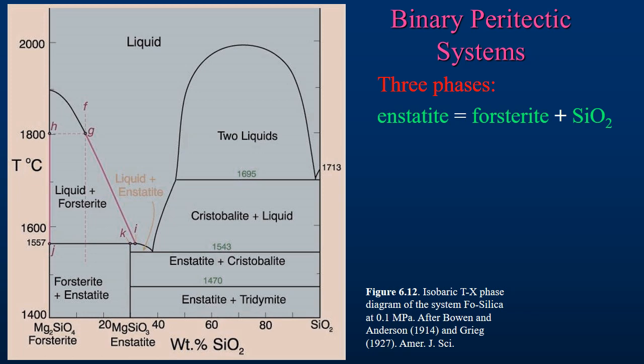On the right side of the eutectic point, the behavior of the forsterite-silicate system is similar to the traditional eutectic system, where the liquid follows the liquidus line crystallizing quartz until the liquid reaches the eutectic point. Once the liquidus reaches the eutectic point, enstatite begins to form, and the system remains at a constant composition and temperature until a phase is lost, in this case the liquid. Once the liquid is consumed, the system goes back to containing two phases, in this case cristobalite and enstatite.